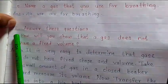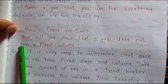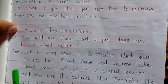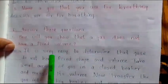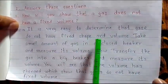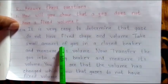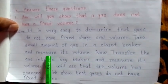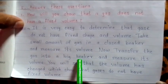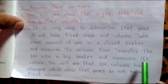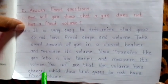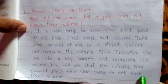Question F: answer this question. Question 1: how will you show that a gas does not have a fixed volume? Answer: it is very easy to determine that gas does not have a fixed shape and volume. Take a small amount of gas in a closed beaker and measure its volume. Now transfer the gas into a big beaker and measure its volume. You will see that the volume has changed, which shows that gases do not have fixed volume.